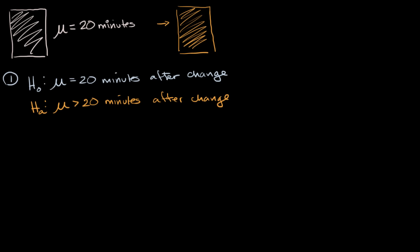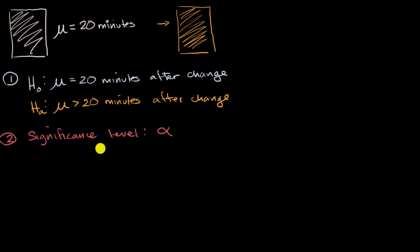The next thing we do is we set up a threshold known as the significance level. Your significance level is usually denoted by the Greek letter alpha. You tend to see significance levels like one one-hundredth, five one-hundredths, or one tenth — one percent, five percent, or ten percent. We're going to set a significance level for this particular case — let's say it's going to be 0.05.